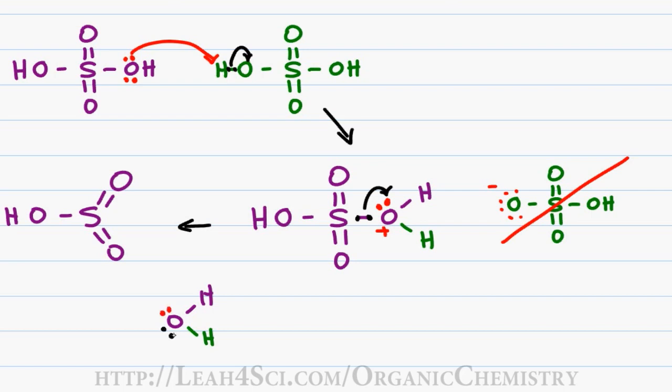But the sulfur is not as lucky. Even though it does have a complete octet, remember that sulfur is an exception to the octet rule. It can have up to twelve electrons or six bonds.